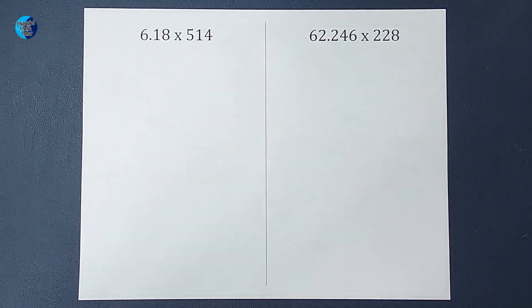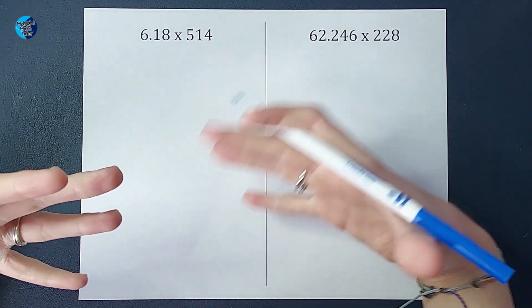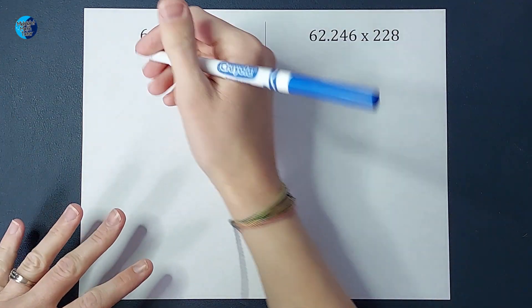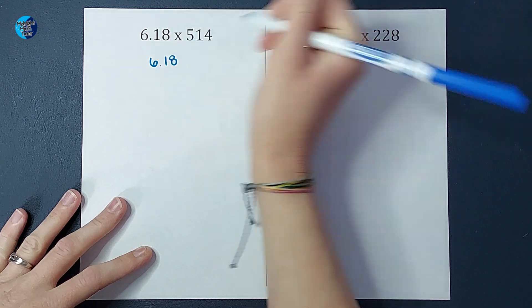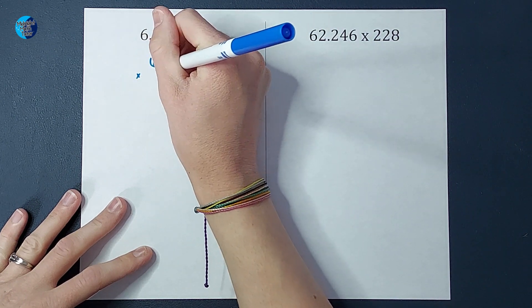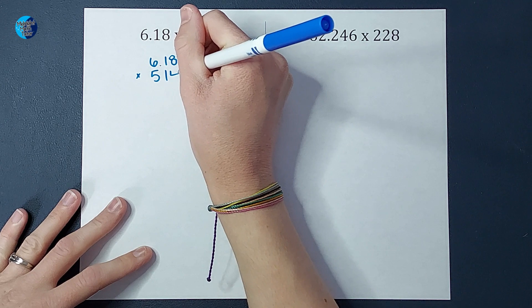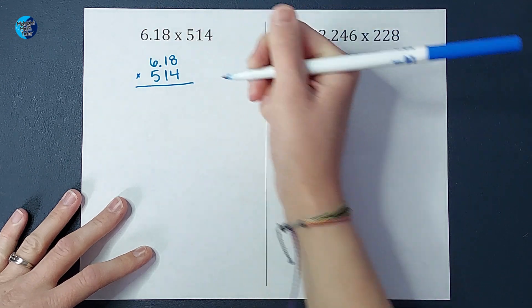So when I set this up, I'm still going to write the decimal, but we can kind of ignore it for a second. So I'm going to write it as 6.18 times 514. My decimals do not have to line up.